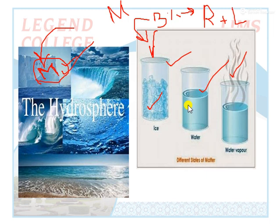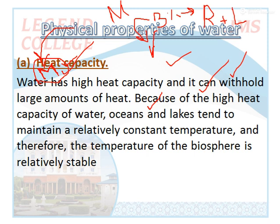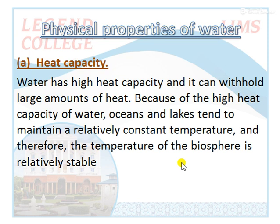Water exists in different states: in the liquid form it exists in marine environments — seas, oceans, etc. In gaseous states, water exists as vapor. Now, if we talk about physical and chemical properties, let us start with physical properties. First, we have heat capacity. Water is colorless. The boiling point of water is 100 degrees Celsius and the freezing point is 0 degrees Celsius. We will discuss these properties in detail.